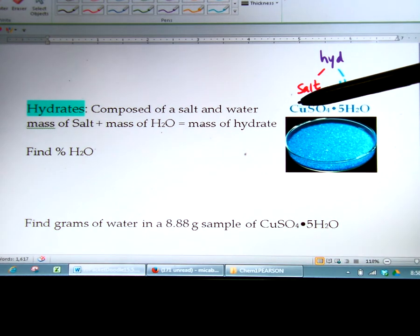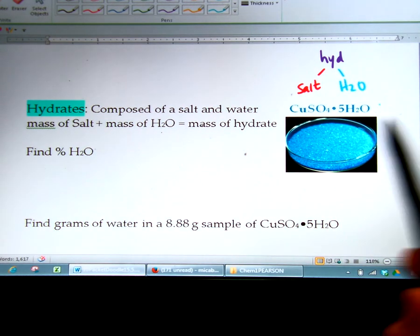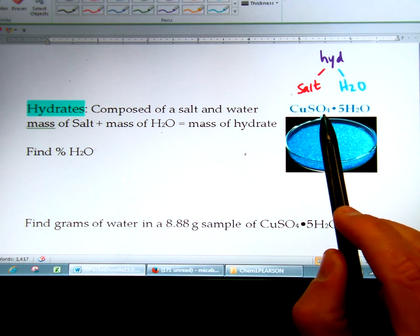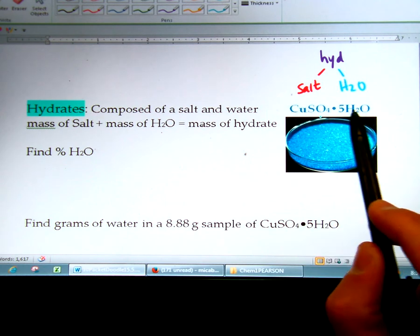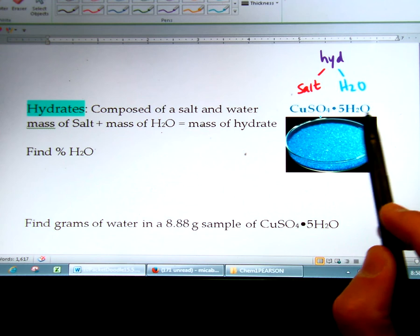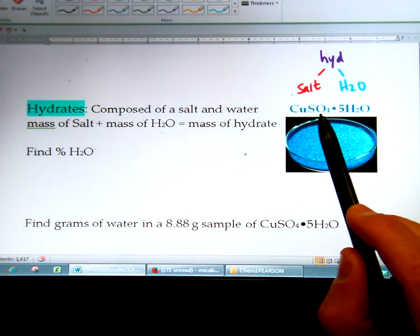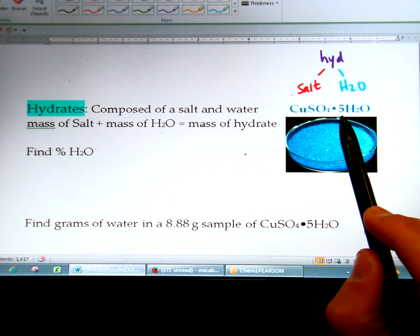So here's an example, CuSO4·5H2O. This is the salt. CuSO4 is the salt and of course H2O is the water. This dot just means attached. It doesn't mean times. So one of these salts is attached to five waters.